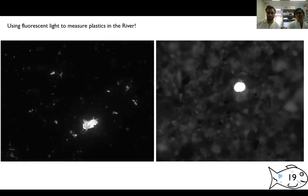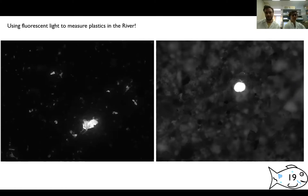This was the last slide. We wanted to show that when we add the dye and look under the microscope, not everything on the slide fluoresces, but those that are plastic do. This allows us to measure the plastic pollution we find in our samples.